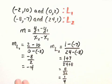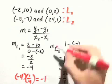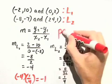So now, the question is, are they parallel? No, because the slopes are not the same. Are they perpendicular? Well, let's see if we multiply the two slopes together. The first slope is negative 4, the second slope is 1 fourth. If we multiply negative 4 times 1 fourth, the product equals negative 1. So we can say that these two lines, L1 and L2, are perpendicular.